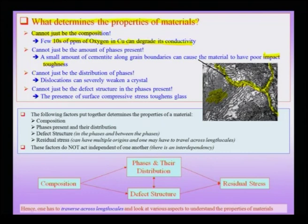I need to worry about the composition — number one. I need to worry about the phases present — number two. But that is not enough. For example, if I have dislocations in a phase, this can weaken a crystal severely. Suppose I take an absolutely pure defect-free single crystal and I try to measure its shear strength — it will turn out to be of the order of gigapascals. But in the presence of dislocations, which are crystallographic defects, the strength of the material can fall by a few orders of magnitude and can severely weaken the crystal.